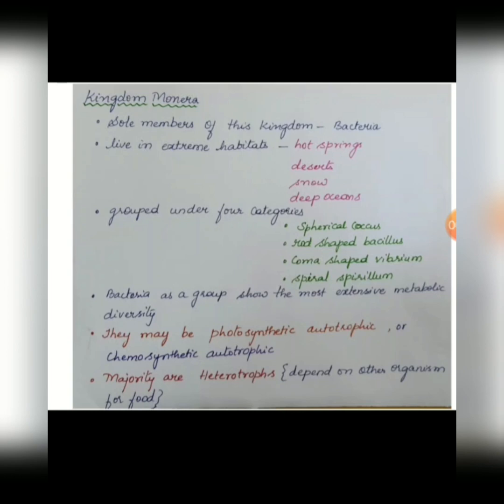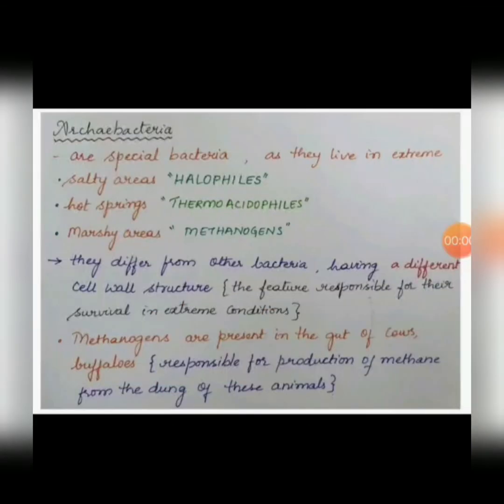Bacteria as a group show the most extensive metabolic diversity. They may be photosynthetic autotrophic or chemosynthetic autotrophic. We will now look into archaebacteria, which are a special form of bacteria that live in extreme conditions.